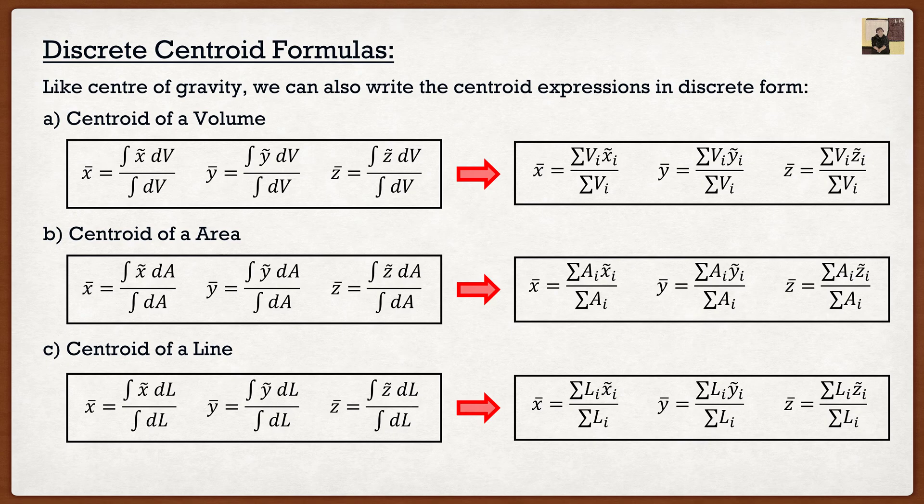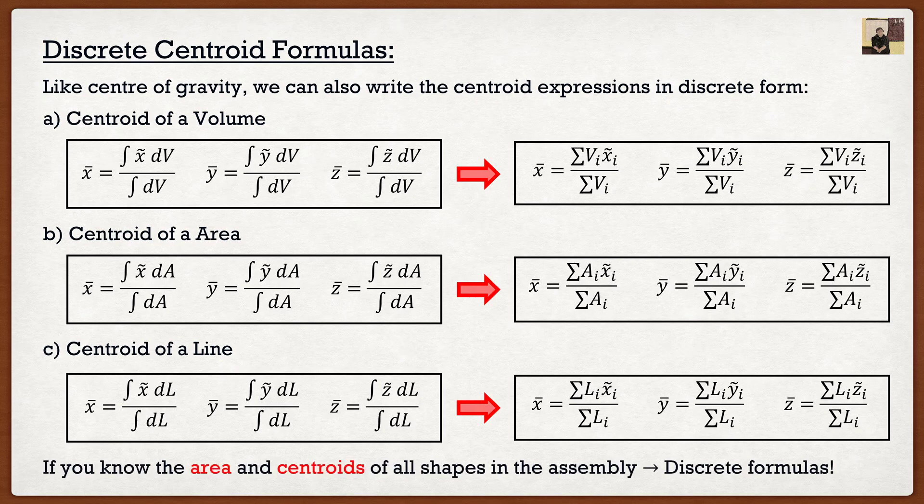Now the key here is this, if I know the area and the centroids of all the shapes in an assembly, then I can use these discrete formulas. And you're saying, well, Platon, what do you mean an assembly? What exactly does this mean?